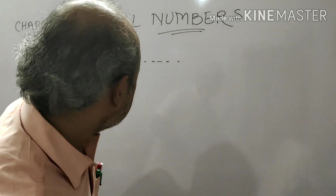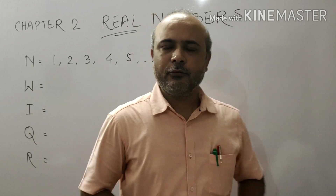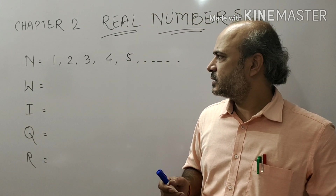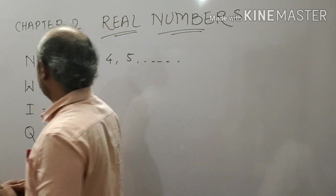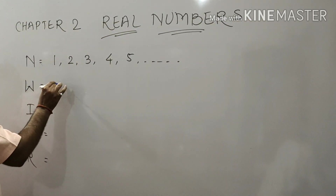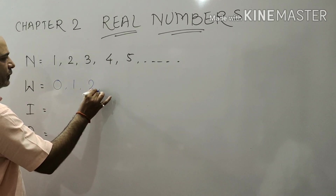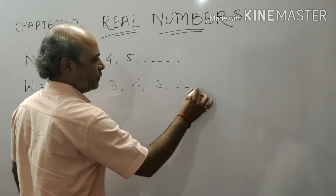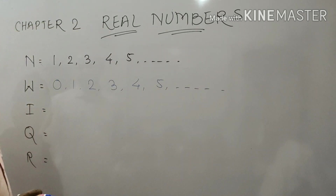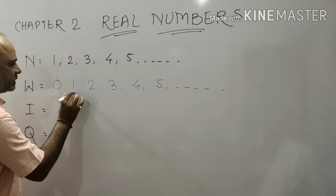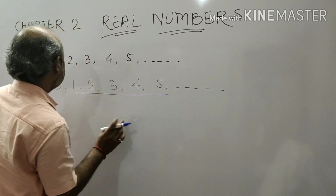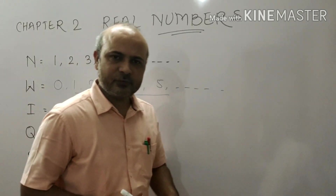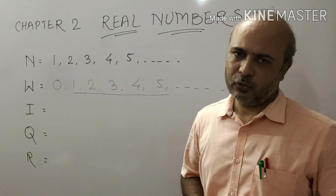Now, talking about whole numbers — when you talk about whole numbers, you start with the natural numbers along with 0. So whole numbers are 0, 1, 2, 3, 4, 5 and so on. Natural numbers along with 0 gives us whole numbers.